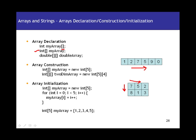Next, array construction. How do you construct an array? Using the new keyword. As discussed earlier, whenever you use the new keyword, it means you are creating an object on the heap. So arrays are created on the heap. This is how you construct an array: you say int[] myArray = new int[5]. Whatever data type you are using — integer, strings, or character — the same data type comes after the new declaration, and you give the number of values you want in that array.